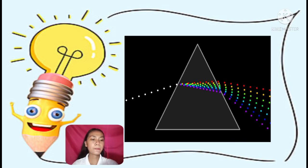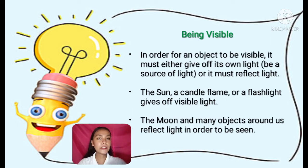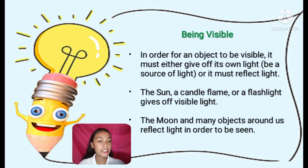The last basic property of light is being visible. In order for an object to be visible, it must either give off its own light or reflect light. The sun, a candle flame, or a flashlight gives off visible light. The moon and many objects around us reflect light in order to be seen.